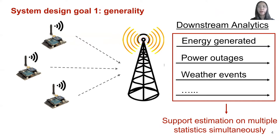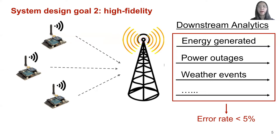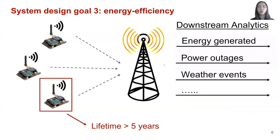To support such general analytics in a low-power manner, we have three system design goals. The first one is generality — we want our system to support the estimation on multiple statistics at the same time, and even support possibly unforeseen statistics for future requirements. The second goal is to provide high fidelity; for example, we want an at most 5% error rate for all statistics of interest. The third goal is to guarantee energy efficiency — we want to support multi-year sensor deployments, for example, a 5-year execution on a single battery charge.